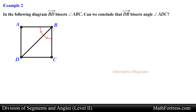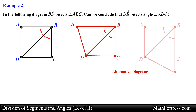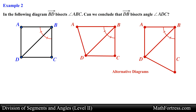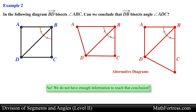We need to determine this with the given information. Notice that segment AD, DC, CB, and BA may or may not be the same length. We have no way of determining this, so the angle may or may not be bisected by ray DB. So in the end we do not have enough information to reach that conclusion.